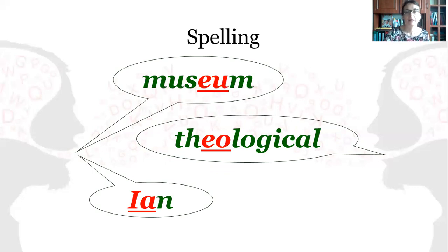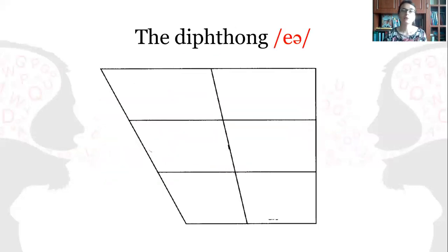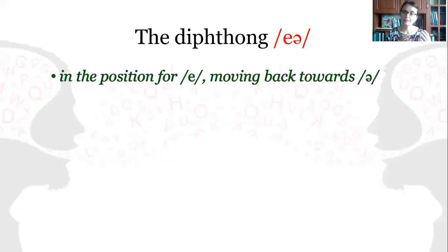Now let's see how to articulate the diphthong /eə/. This is the graphic representation of the movement of the glide, and we notice that it begins in the position for /e/ moving back towards /ə/, and the lips are neutral.